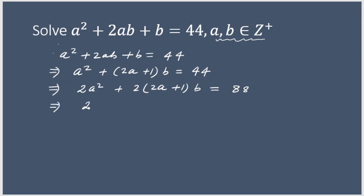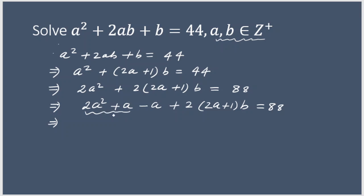Now I will do the addition here: 2a² + a, and since I have added a, I will subtract minus a, and then 2(2a + 1)b = 88. By doing this, I will be able to take a common from here. I will get a(2a + 1) + 2(2a + 1)b − a = 88.